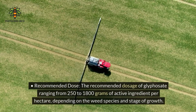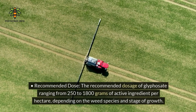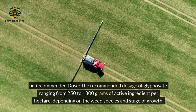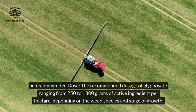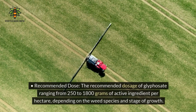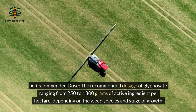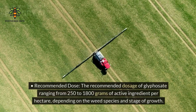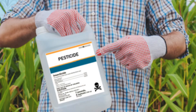Recommended dose: the recommended dosage of glyphosate ranges from 250 to 1,800 grams of active ingredient per hectare, depending on the weed species and stage of growth. It is crucial to follow label instructions and local regulations for safe and effective application.